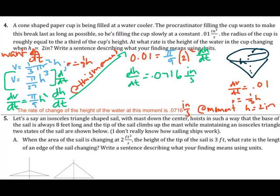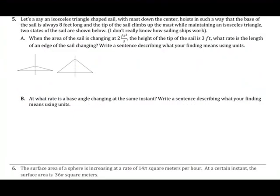Problem 5: pause the video and try working through it before checking. An isosceles triangle shaped sail with a mast down the center hoists such that the base is 8 feet long and the tip climbs the mast while maintaining an isosceles triangle shape. Each half of the base is 4 feet, and the two slanted sides are equal in length — this is still true as the sail changes.